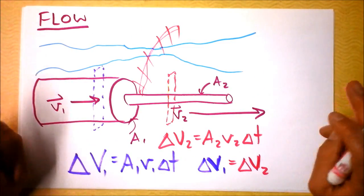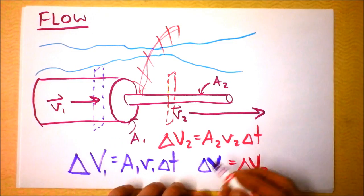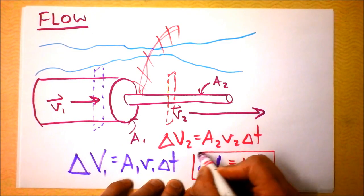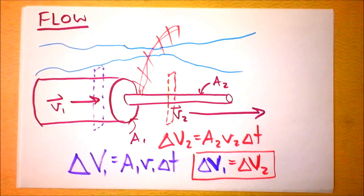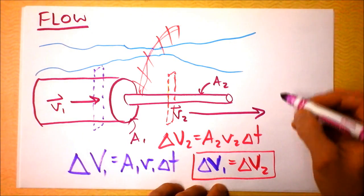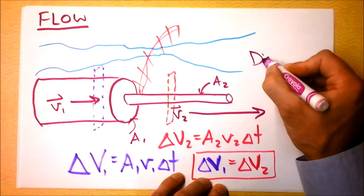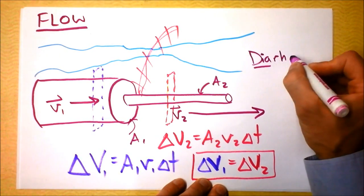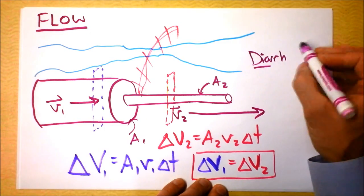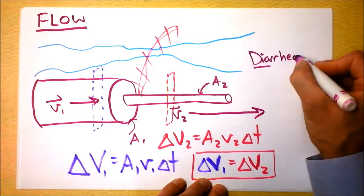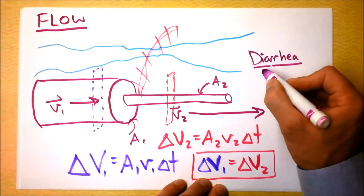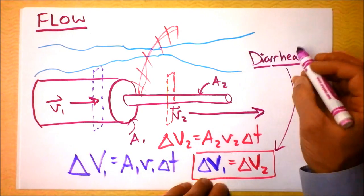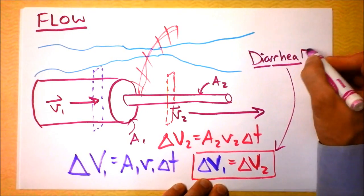If nothing weird is happening — no fluid capacitors or anything — then it's going to be a steady flow of fluid. I call this, from the Greek, the diarrhea equation. Dia means 'through' and rhea means 'flow,' so this is the equation for flowing through — the diarrhea equation.